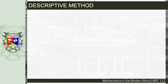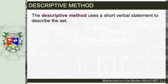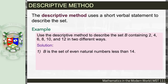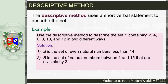The descriptive method uses a short verbal statement to describe the set. For example, use the descriptive method to describe the set B containing {2, 4, 6, 8, 10, 12} in two different ways. One way: B is the set of even natural numbers less than 14. Another way: B is the set of natural numbers between 1 and 15 that are divisible by 2 — since all elements are even numbers between 1 and 15.